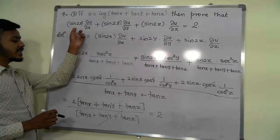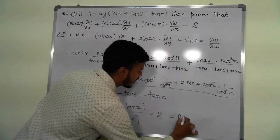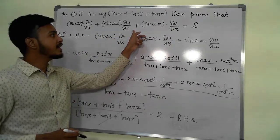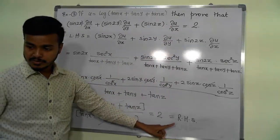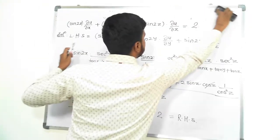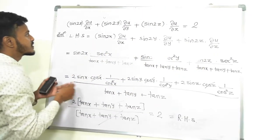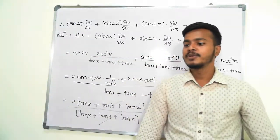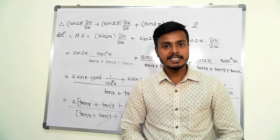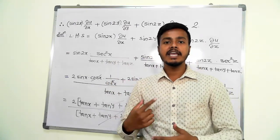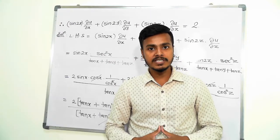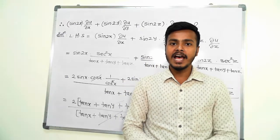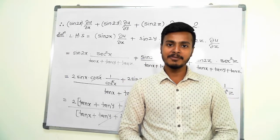The tan x plus tan y plus tan z in the numerator cancels with the denominator, and we get 2. Therefore sin 2x times del u by del x plus sin 2y times del u by del y plus sin 2z times del u by del z equals 2, which is the required result. Thank you for watching and enjoy learning mathematics.